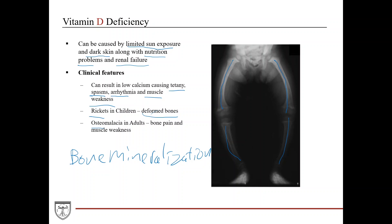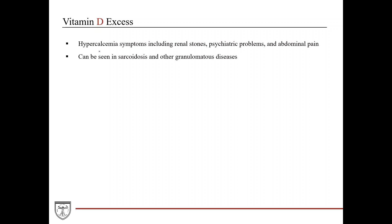In adults, vitamin D deficiency causes osteomalacia, presenting with bone pain and muscle weakness. For vitamin D excess, you can develop hypercalcemia, with symptoms including renal stone formation, psychiatric problems, and abdominal pain. This can be seen in sarcoidosis and other granulomatous diseases.